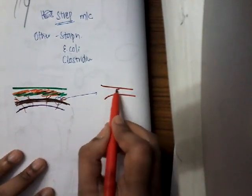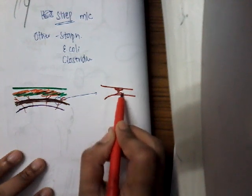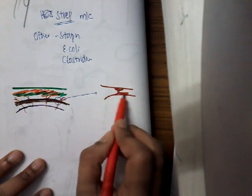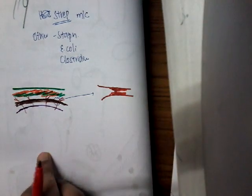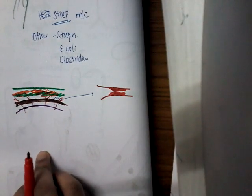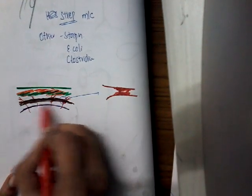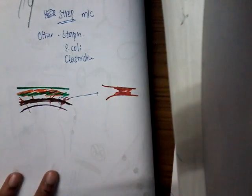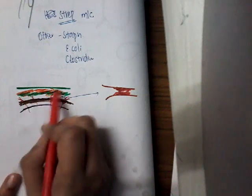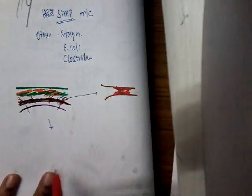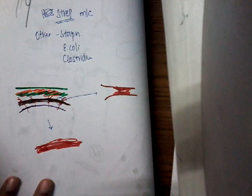In the arteries, it causes obliterative arteritis — inflammation of the arteries, thus obliterating their structure. It causes obliterative arteritis of the arterioles. Once the arterioles are obliterated, there is no blood supply to the skin. As a result, the skin undergoes gangrene.